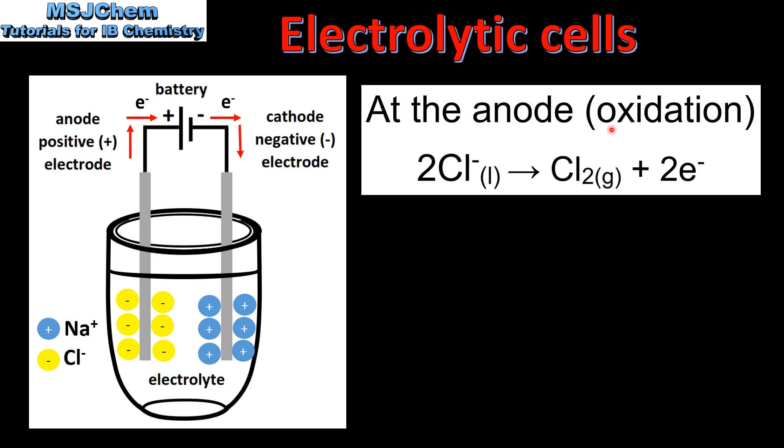At the anode we have oxidation. The negative chloride ions are attracted to the positive electrode where they are oxidized to form chlorine gas.